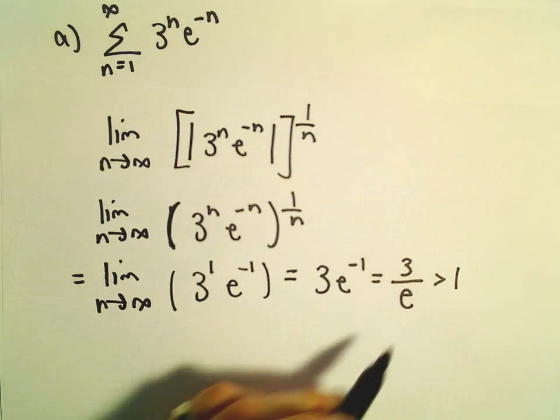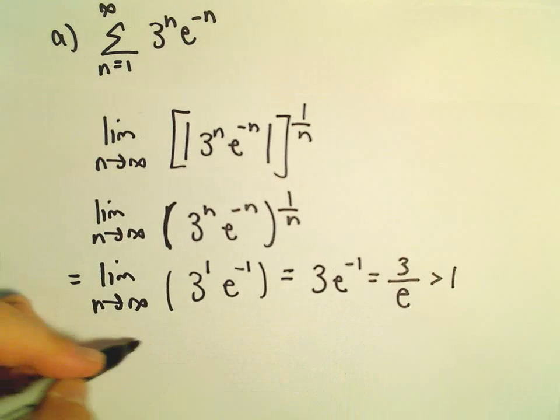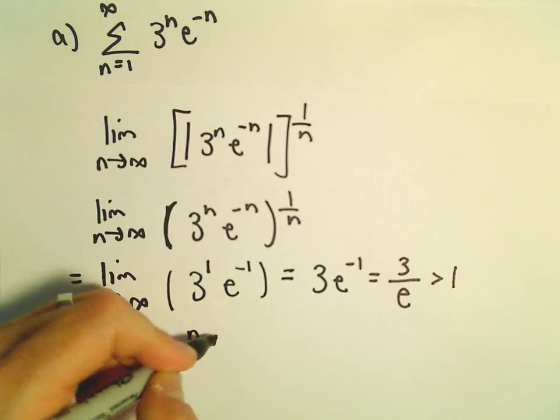And well, this is greater than 1 because e is smaller than 3. So that's going to tell us that our series diverges.